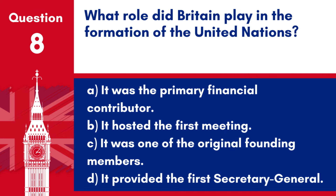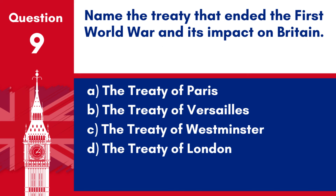Question 8. What role did Britain play in the formation of the United Nations? a. It was the primary financial contributor. b. It hosted the first meeting. c. It was one of the original founding members. d. It provided the first Secretary-General. Answer: c. Britain played a significant role in the formation of the United Nations as one of the original founding members, instrumental in drafting the UN Charter.